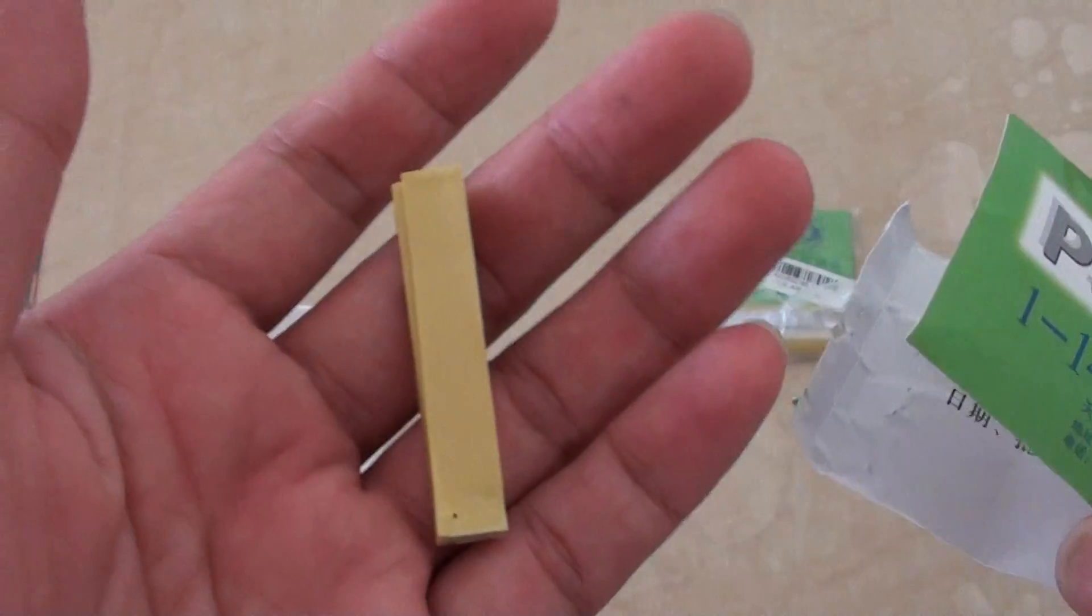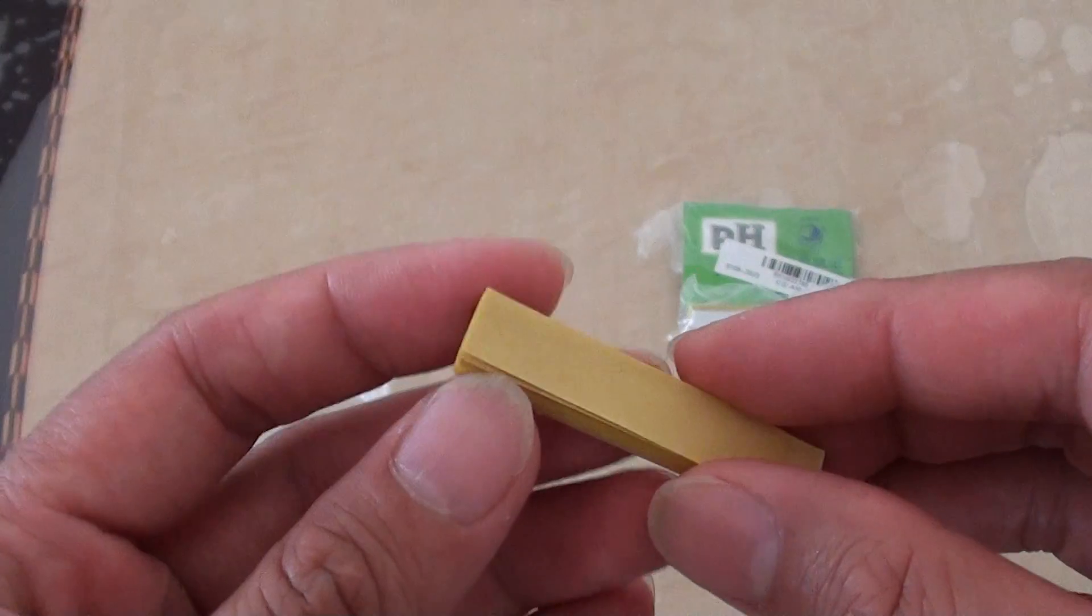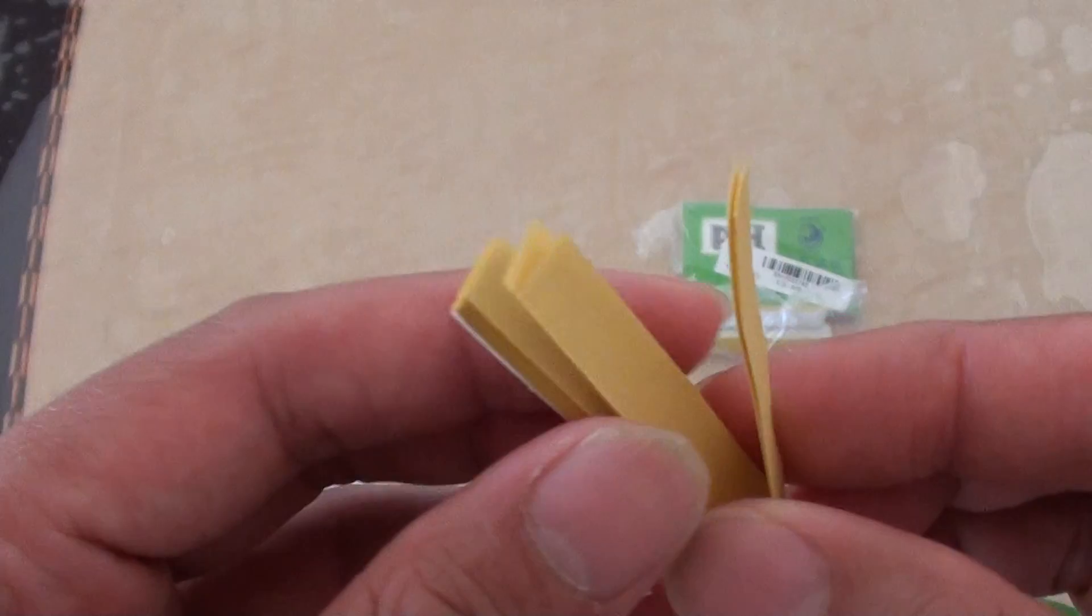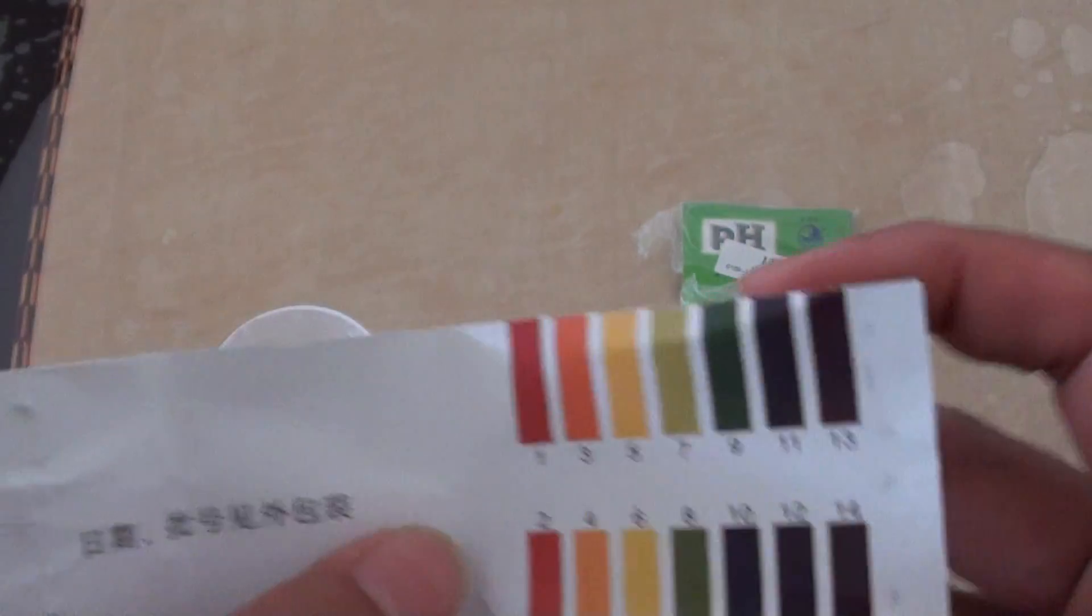Basically, once you've got this paper, you can dip it into your saliva or urine. It will come out with different colors. And based on the color, you can use the chart to see what you're getting.